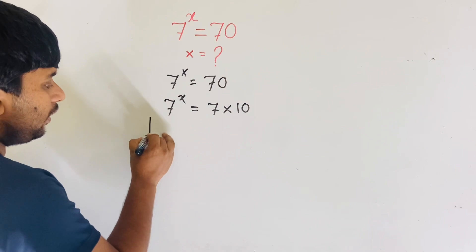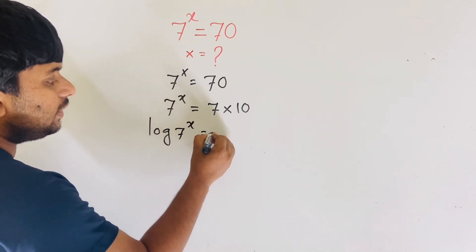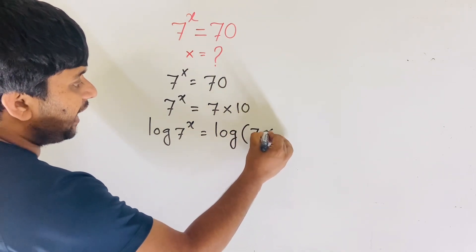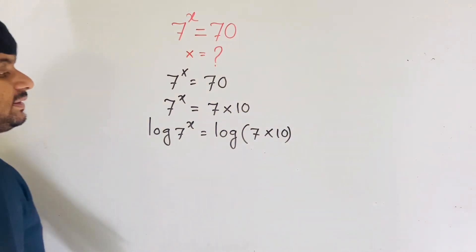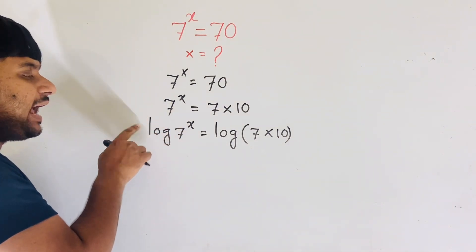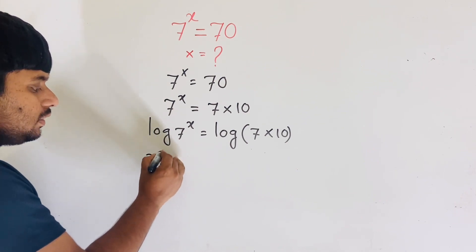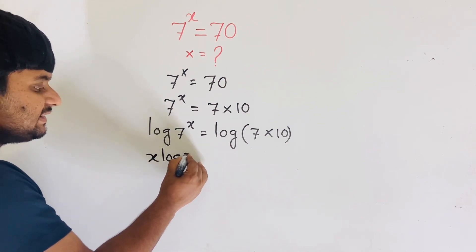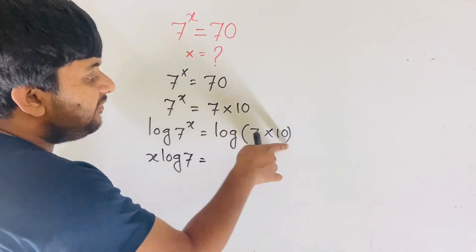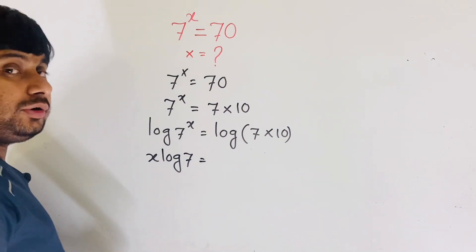Now I apply log to both sides: log(7^x) equals log(7 times 10). According to logarithm rules, the exponent x moves to the front, giving us x times log 7 equals log(7 times 10).